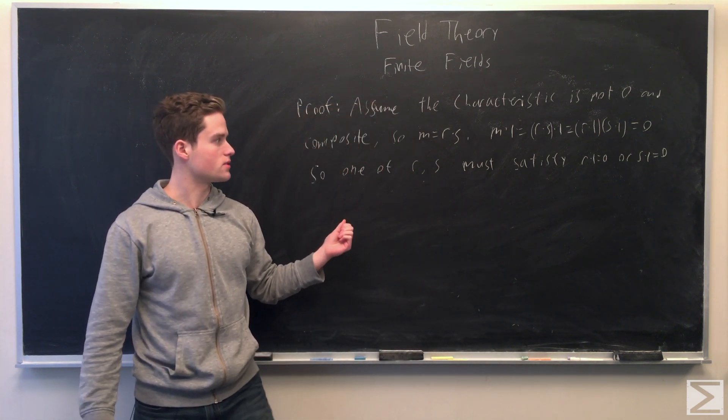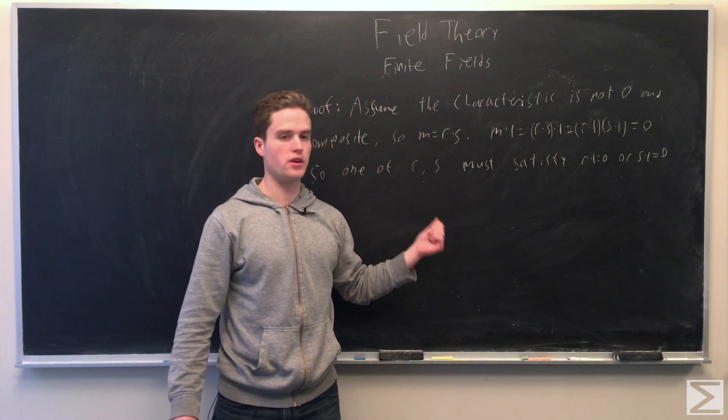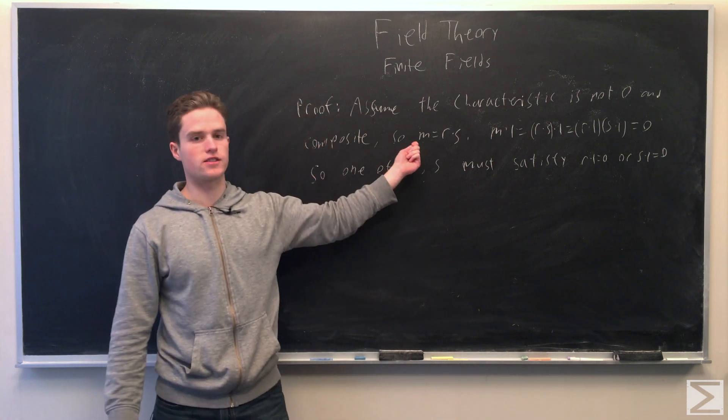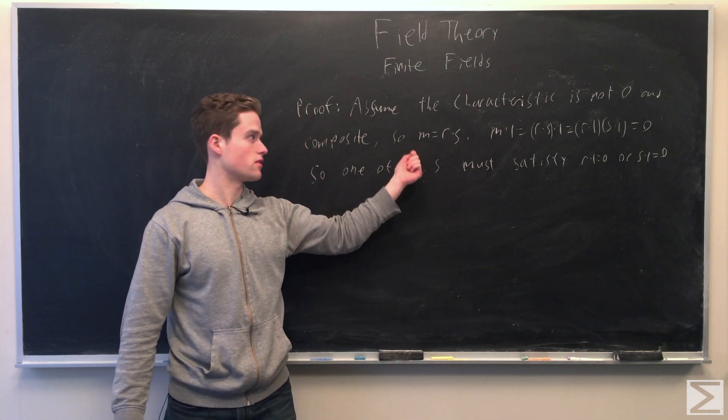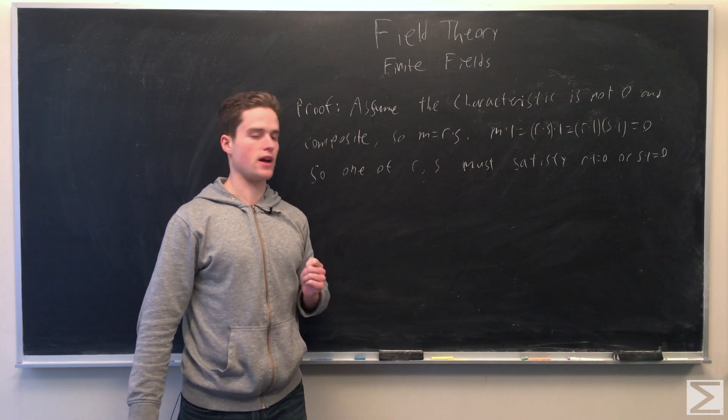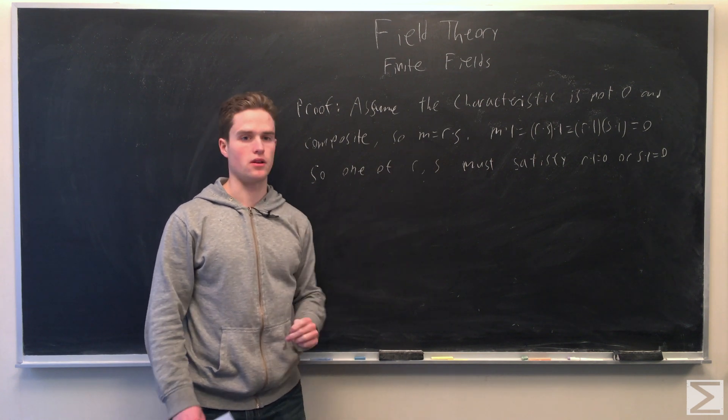So one of the r or s must satisfy r times 1 equals zero or s times 1 equals zero. But this contradicts m being a characteristic because it has to be the least positive integer that satisfies this. So we have our contradiction and so m must be a prime number.